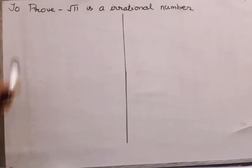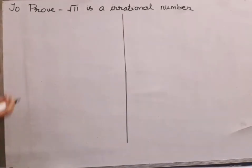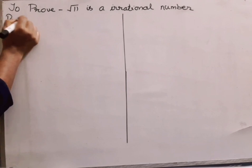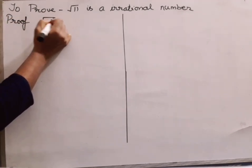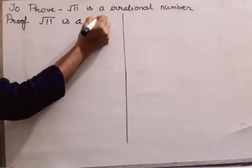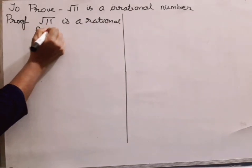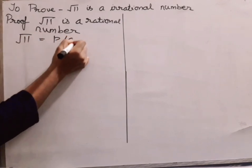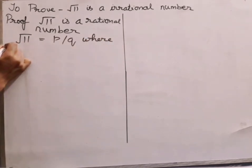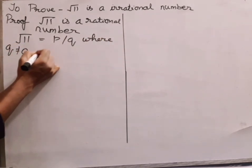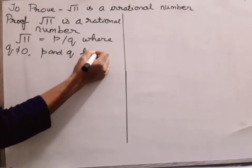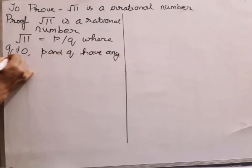We are taking a question here to prove that √11 is an irrational number. To prove this, we will take the opposite assumption — that √11 is a rational number. When we take √11 as a rational number, it can be written in the form P/Q, where Q is not equal to 0, and P and Q should not have any common factor other than 1.